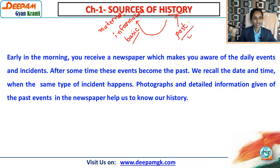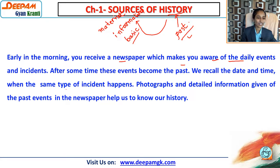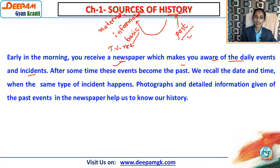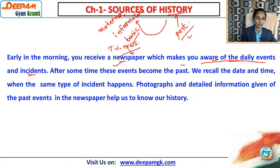So which are the sources? That we are going to discuss in this chapter. Early in the morning you receive a newspaper which makes you aware of the daily events and incidents. You know very well that daily in the morning you get a newspaper, or even on TV you watch the news. Why? Because you get to know about the daily events or incidents — whatever things happen, we get information from there.